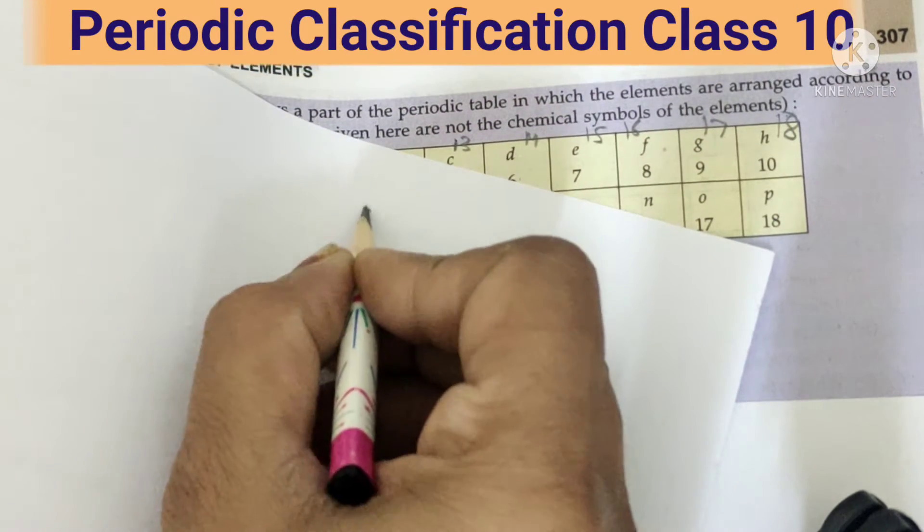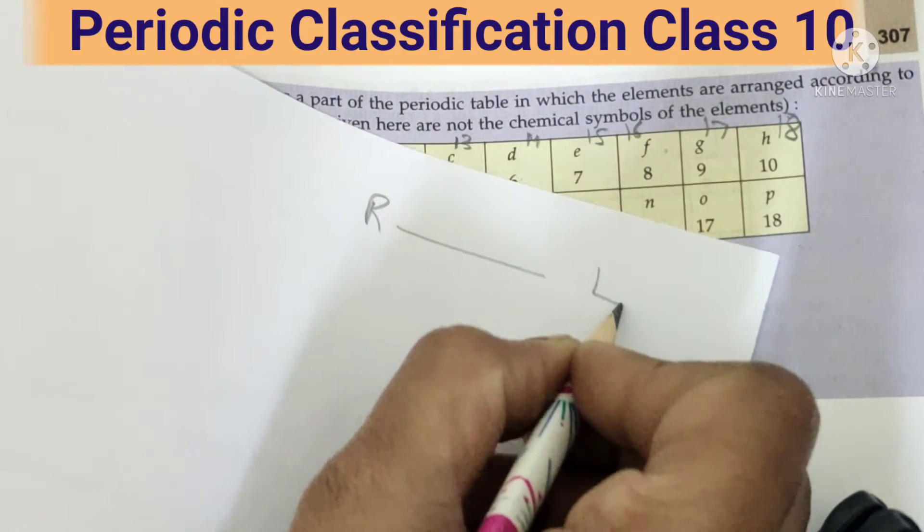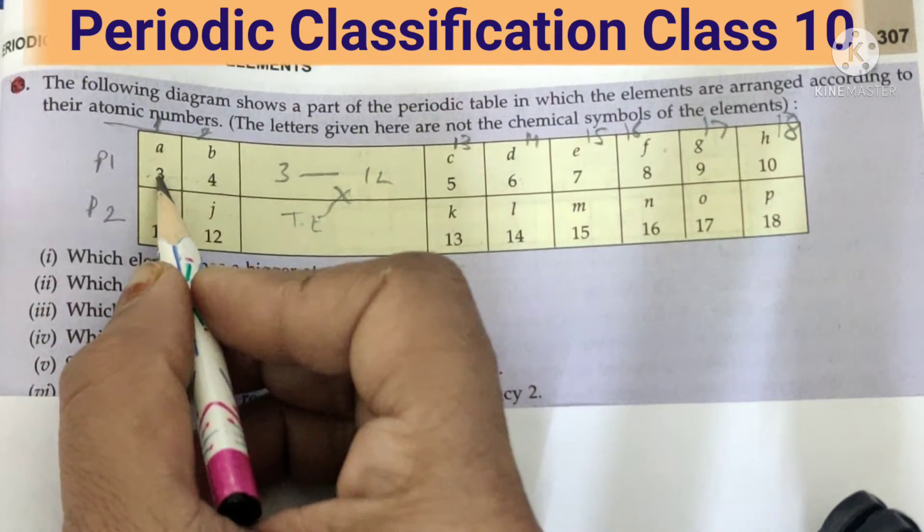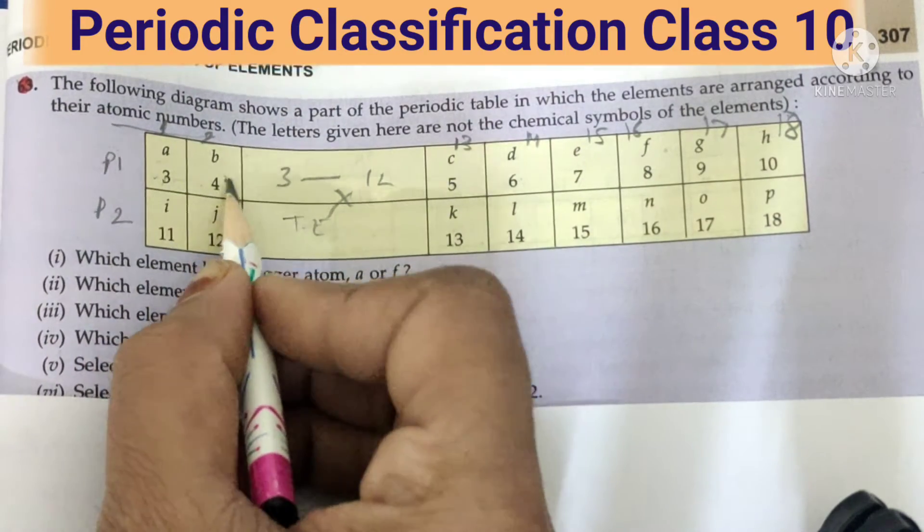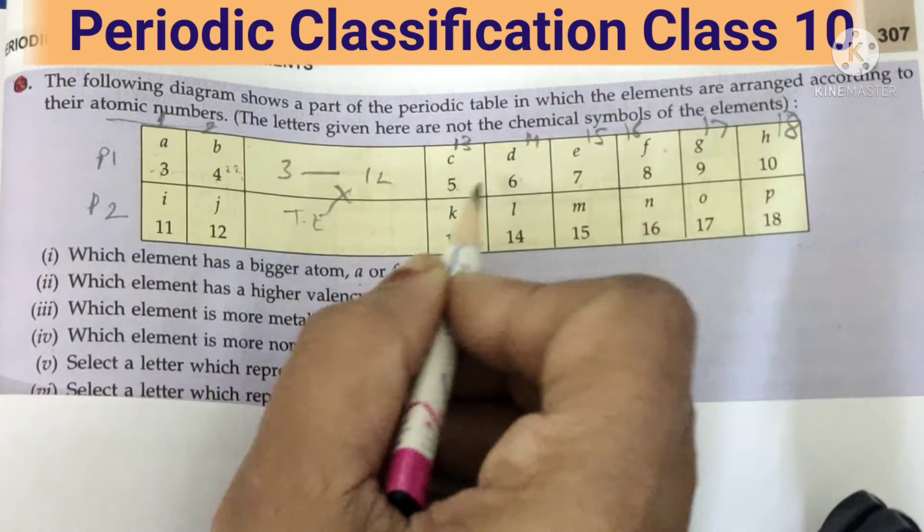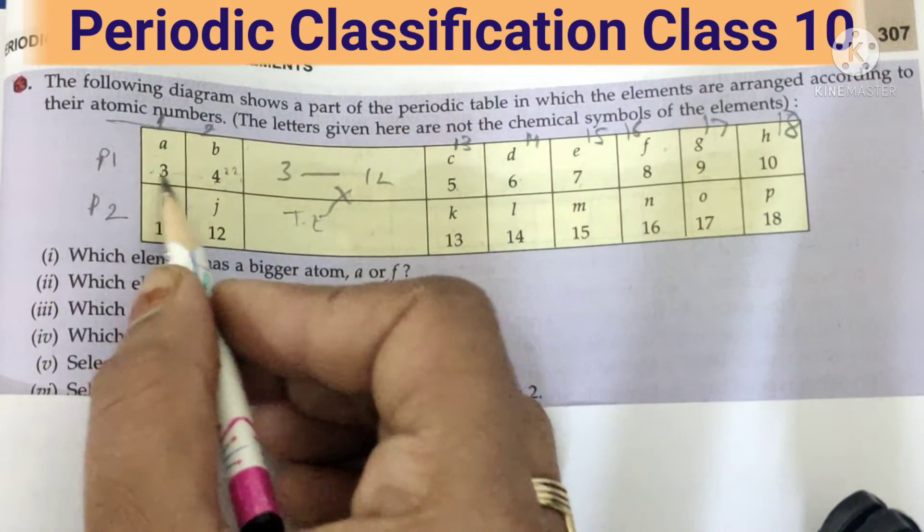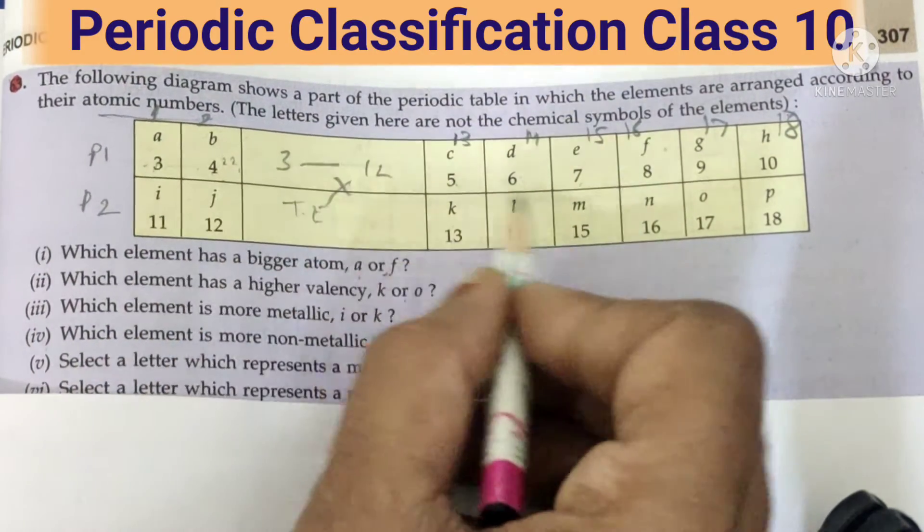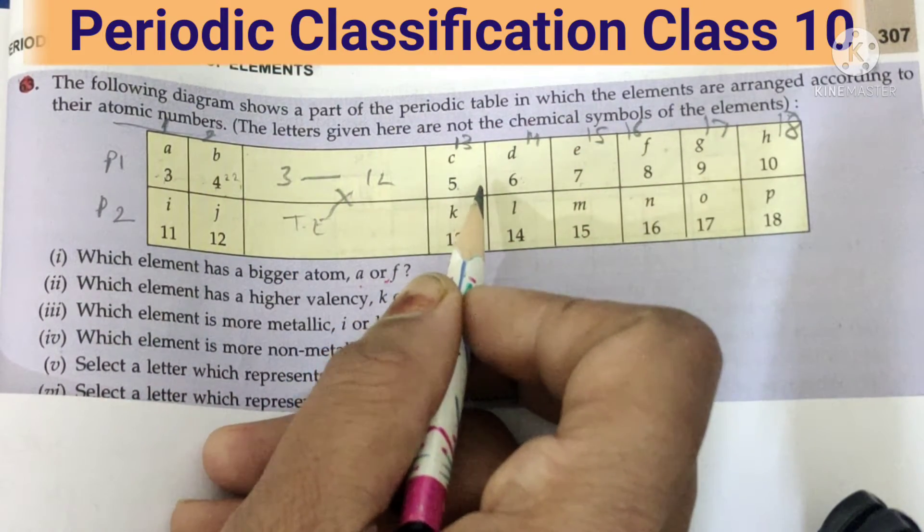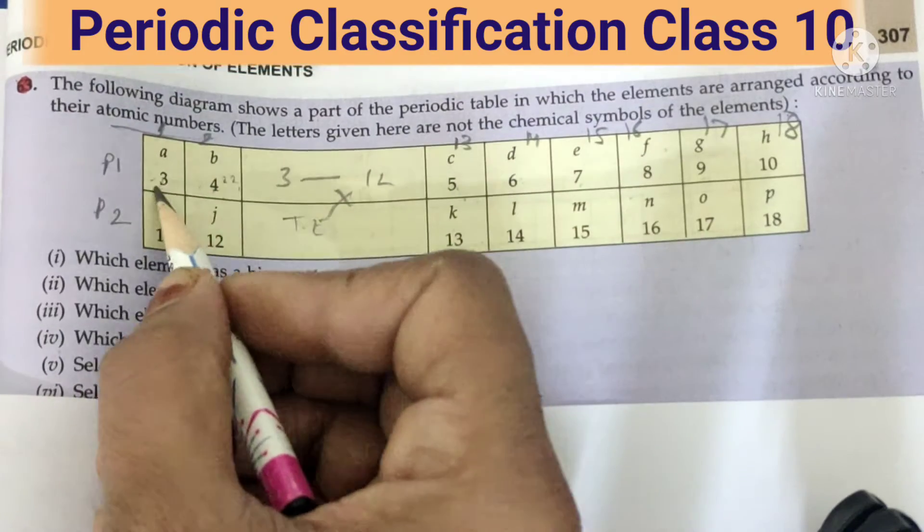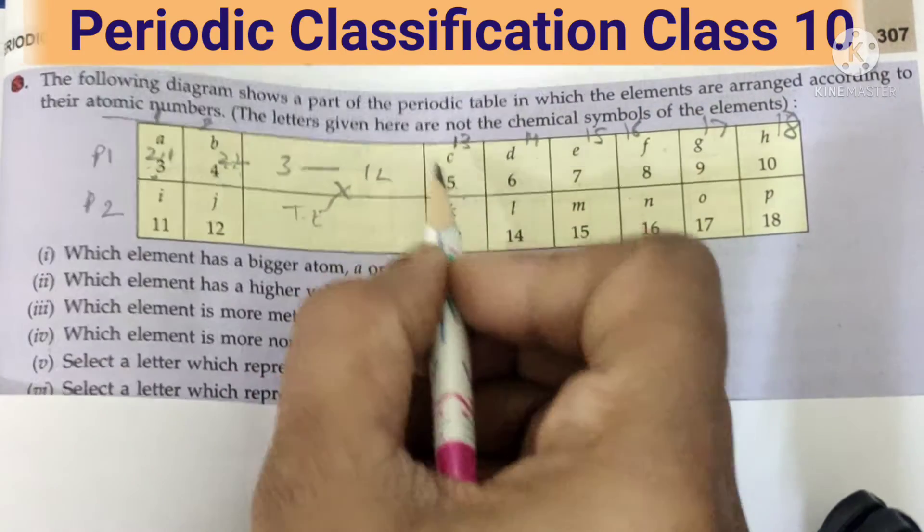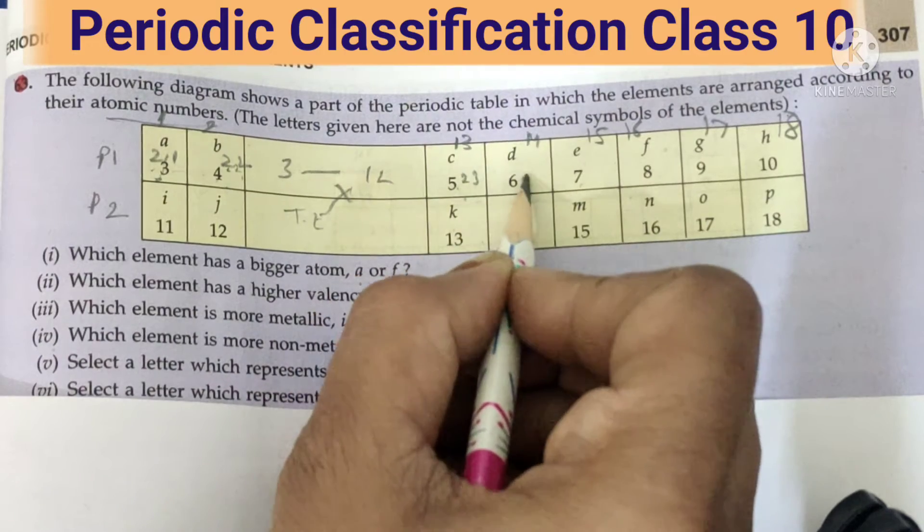We have learned that when we go from right to left, the size of the... they all have two shells. So it is two shells, two shells, two shells. So the size of the atom, we will check by the number of electrons. Here is one, this is two, this is two one, finish, this is two two, this is two three, this is two four.